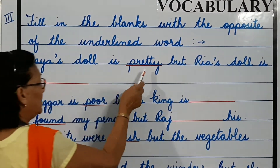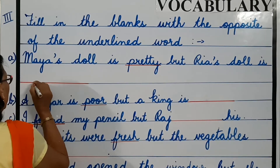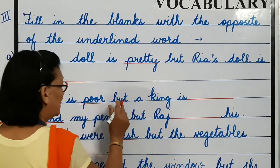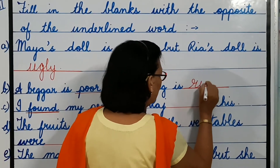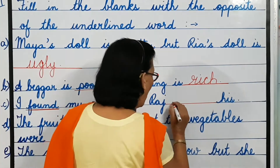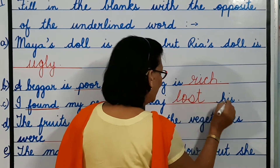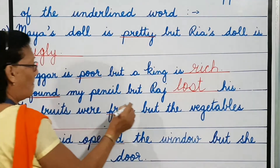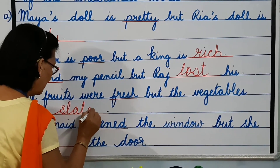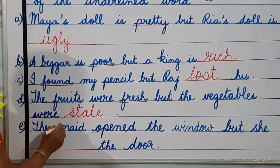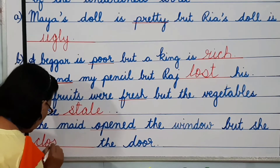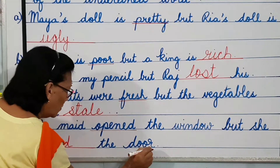Maya's doll is pretty but Rhea's doll is ugly. A beggar is poor but a king is rich. I found my pencil but Raj lost his. The fruits were fresh but the vegetables were stale. The maid opened the window but she closed the door.